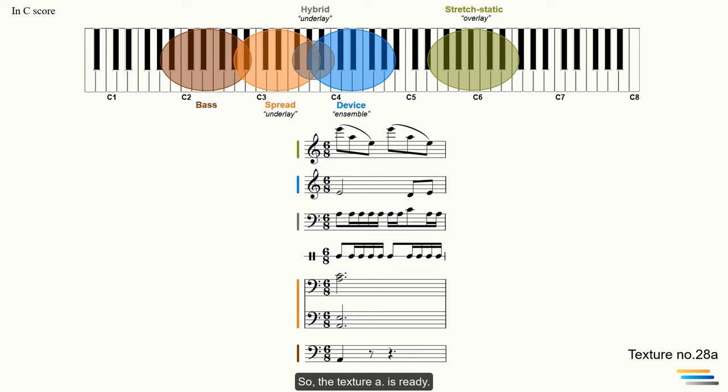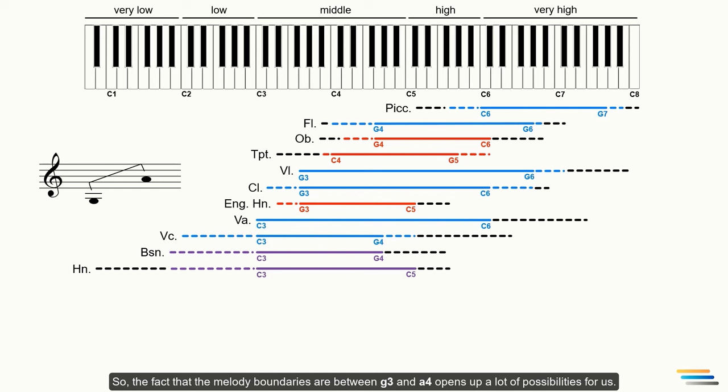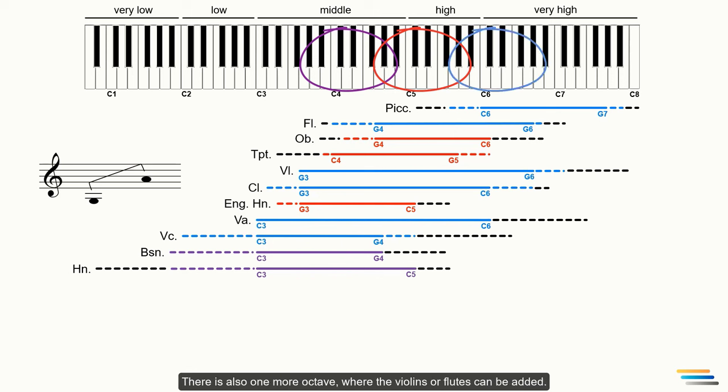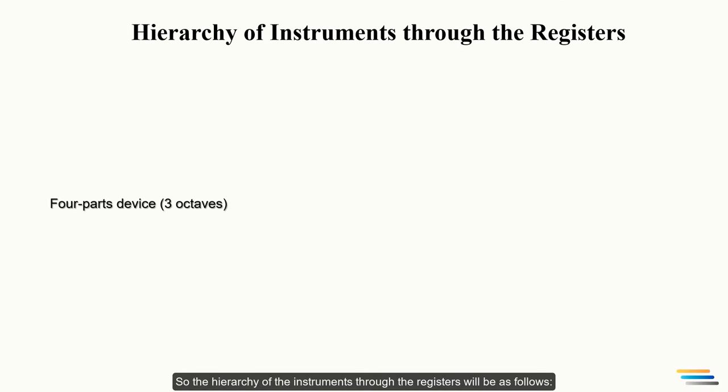So the texture A is ready. The next texture 28B will contain chordal and polyphonic elements. But first let's check out what instruments can be chosen. Chart number 1 will show you how to do this correctly. So the fact that the melody boundaries are between G3 and A4 opens up a lot of possibility for us. The horns are in their best of best register. If add the trumpets above them, then they will be in their best of best register, right? There is also one more octave where the violins or flutes can be added. The last octave is well suited with the piccolo, xylophone, and piano. This is a wide-space four-part melodic device. That's why we learned this chart in our previous lectures.